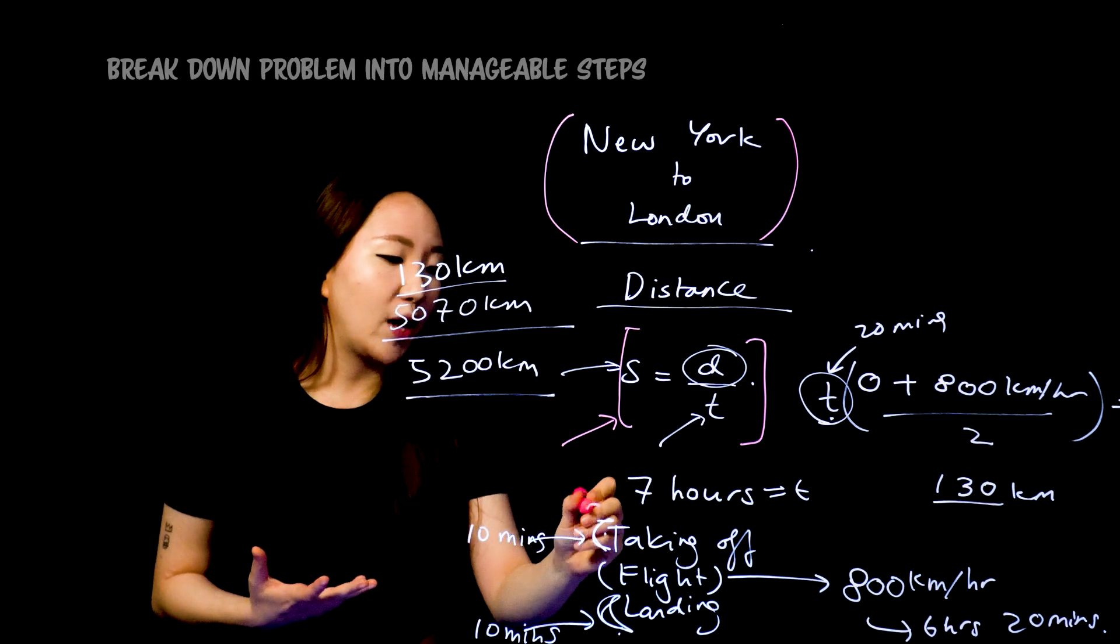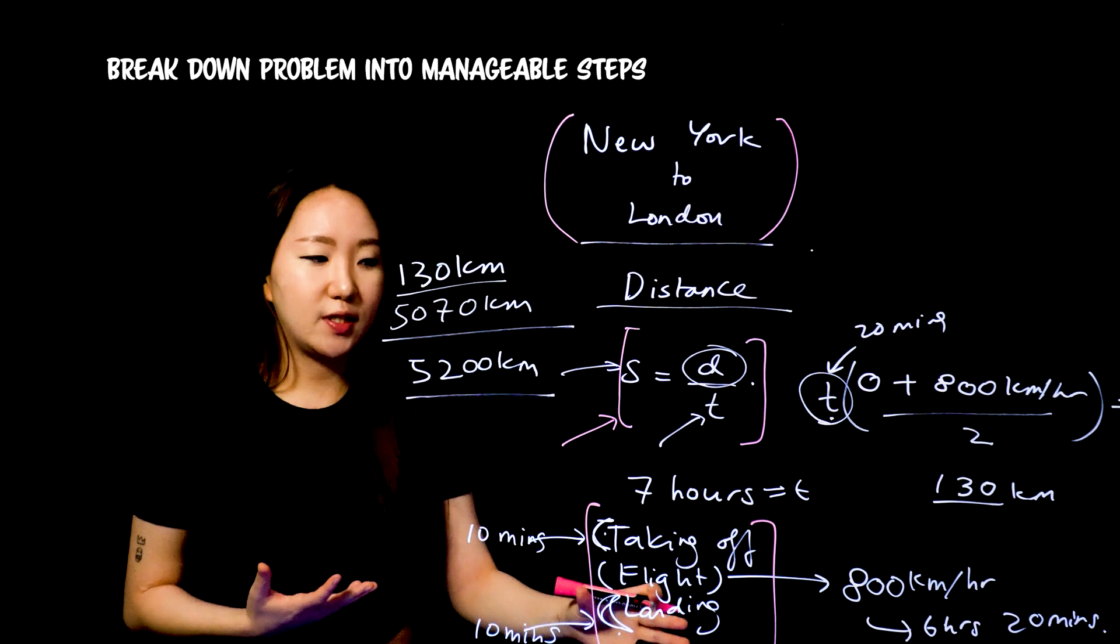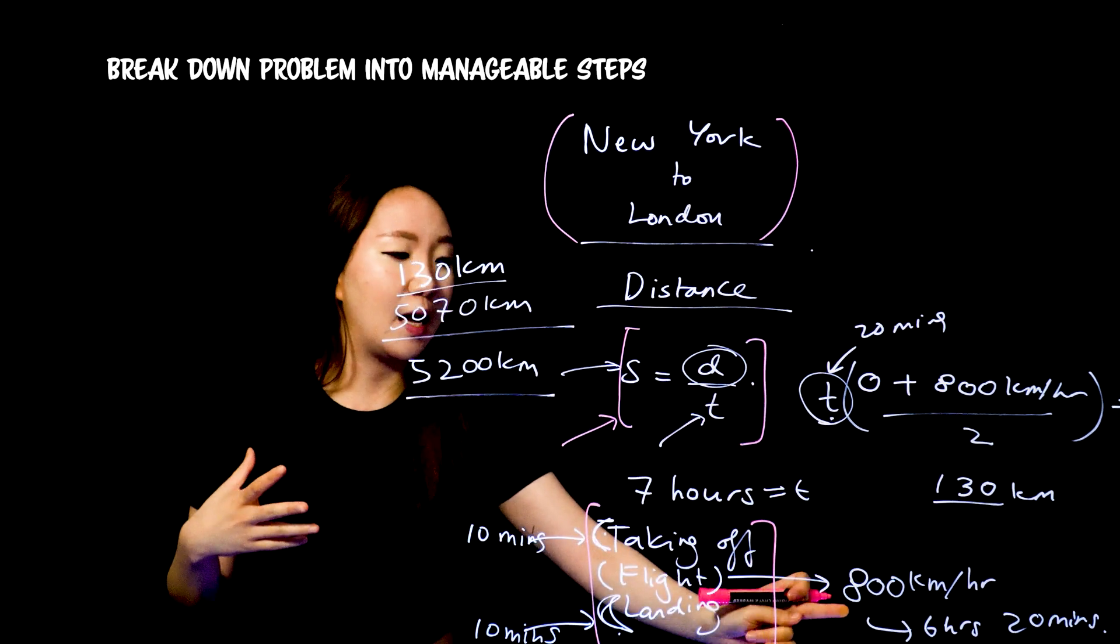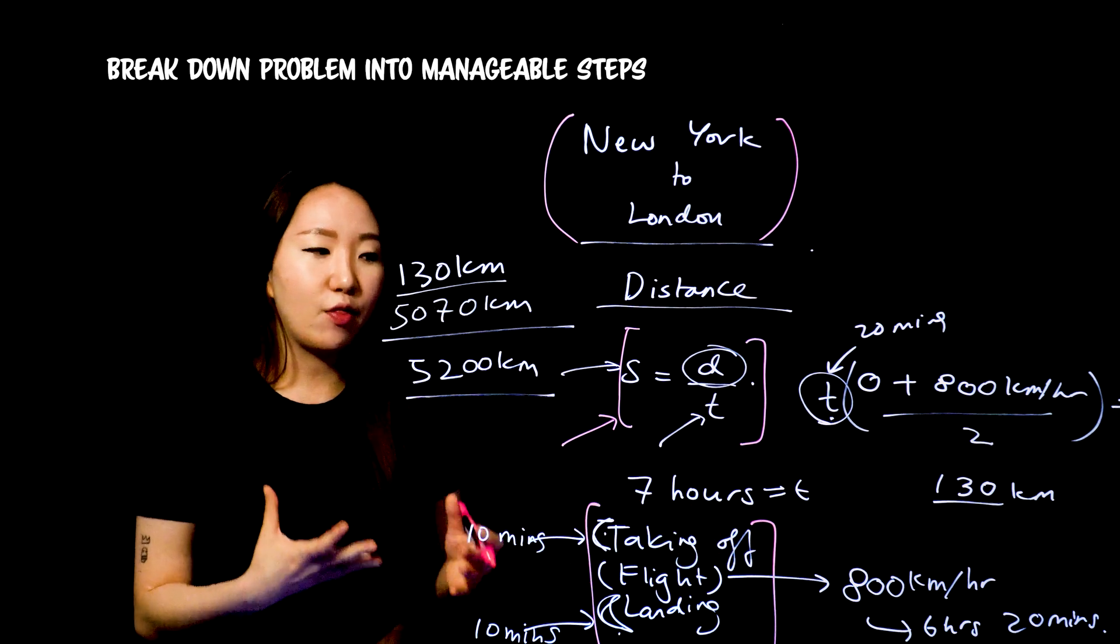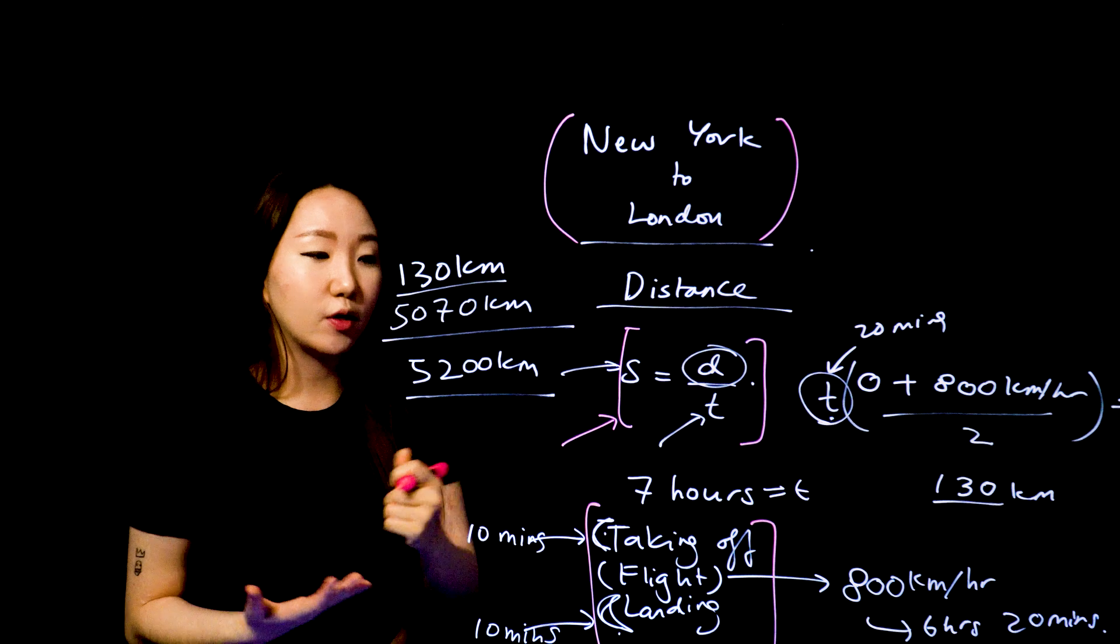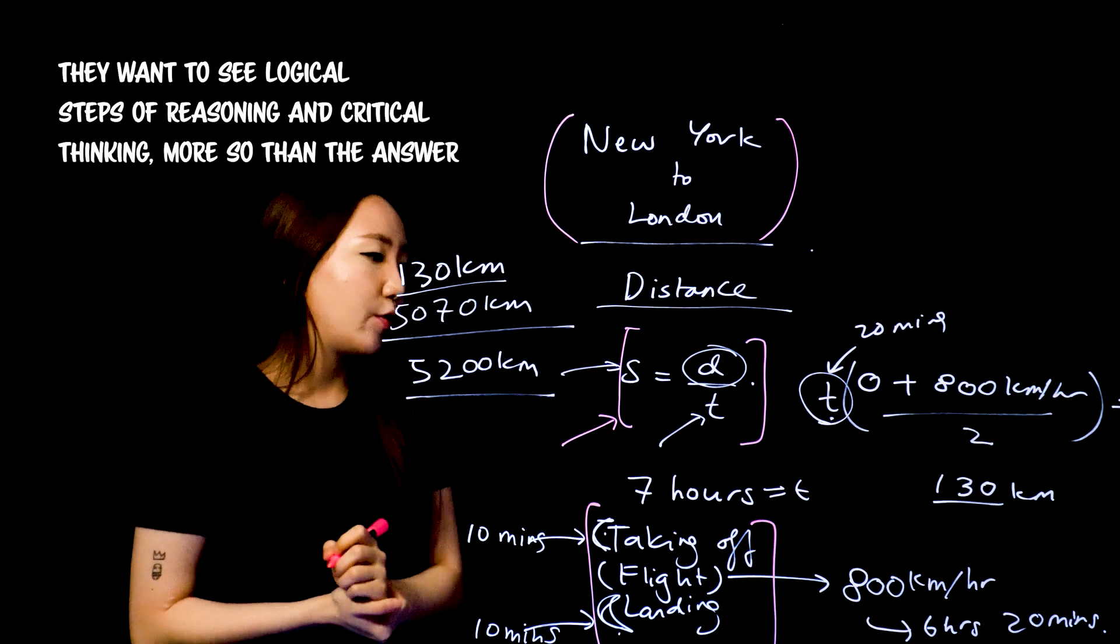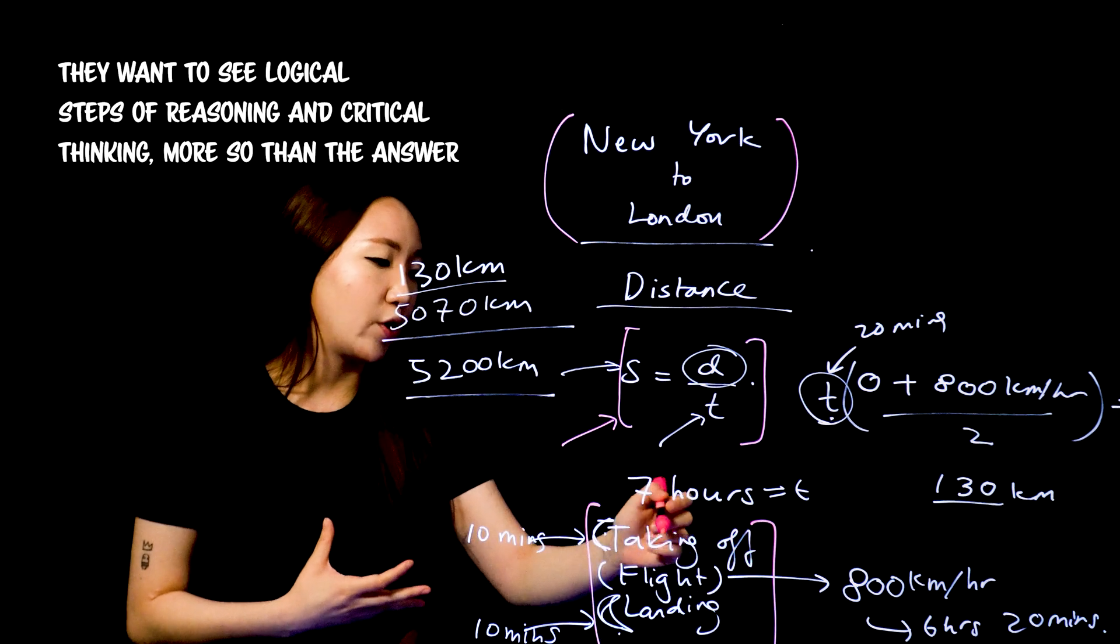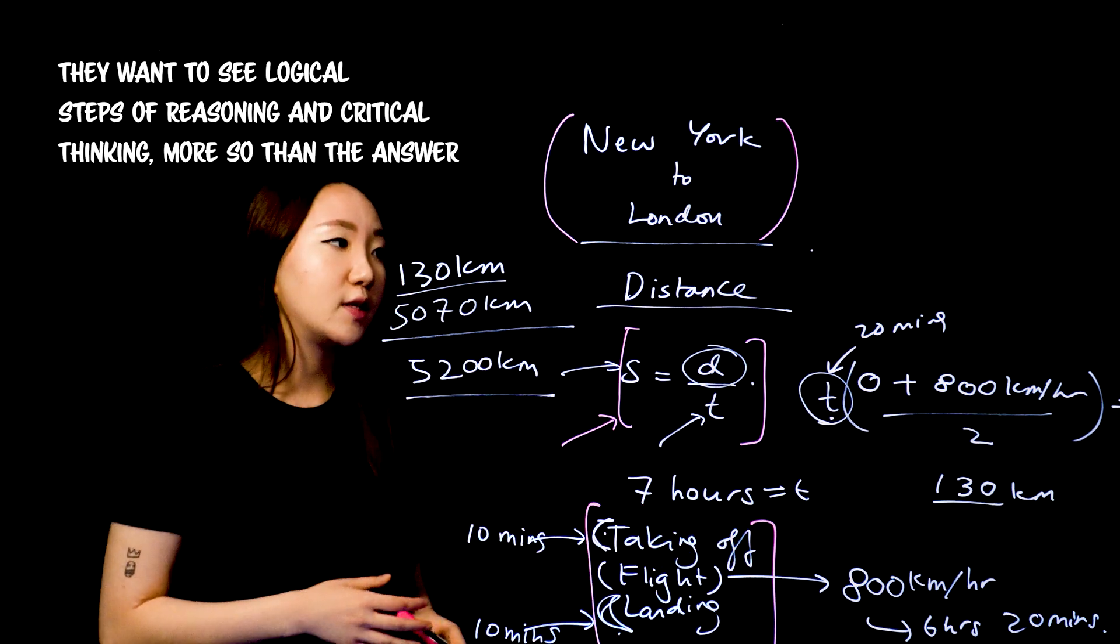The second part was basically breaking down the problem into manageable steps. You could have just said the whole distance at 800 kilometers an hour, but then that might show that you haven't thought it through as well. And then obviously your answer would not be as accurate either. So this is obviously not precise, but because I broke it down into these two steps, it gets closer to the actual goal.